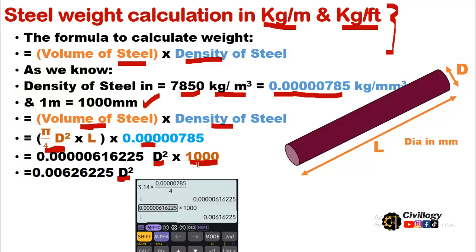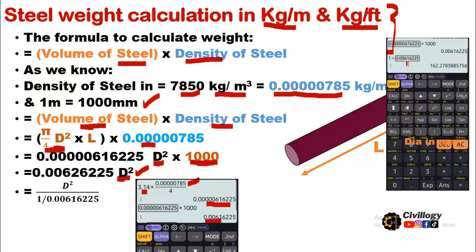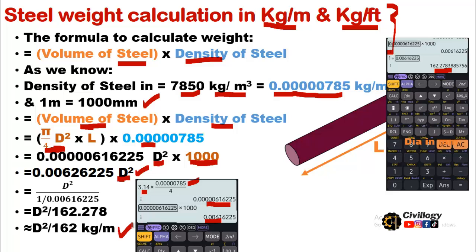Taking the value of π multiplied by the density of steel divided by 4, and then multiplying by 1000 mm (unit length), we get the constant 0.00617. By simplifying — dividing — we get D² divided by 162.278, which is approximately written as D² divided by 162 kg per meter.